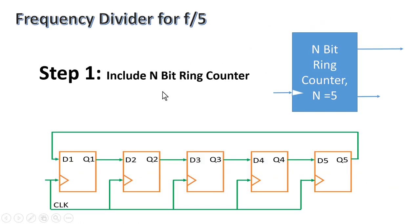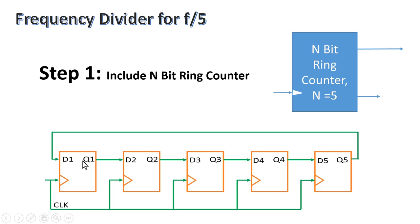In the first step of the design process, you have to include an N-bit ring counter. Since we are designing a frequency divider for F by 5, we take N equal to 5 and include a 5-bit ring counter in our design. As per the functionality of this ring counter, the output of flip-flop 1 goes to the input of flip-flop 2, flip-flop 2 to flip-flop 3, and so on. Finally, the output of flip-flop 5 goes back to the input of flip-flop 1.